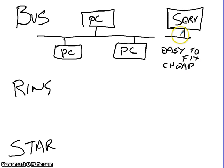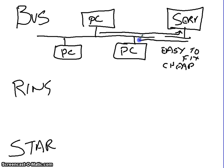The downside was that if there was ever a break in the main connection, you were completely disconnected from the network. Also, it's not the most efficient — if you wanted to send a message, you had to send it all the way along the bus line and then all the way back. If everybody's doing this at once, you could end up with a lot of interference on the line.